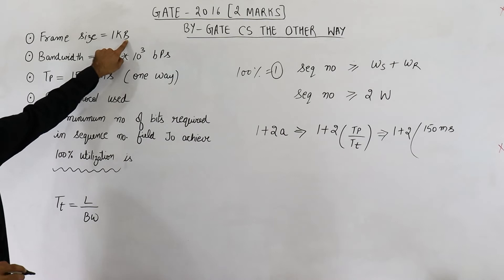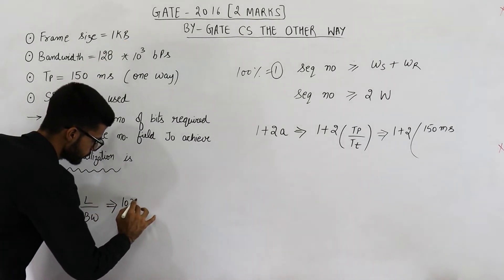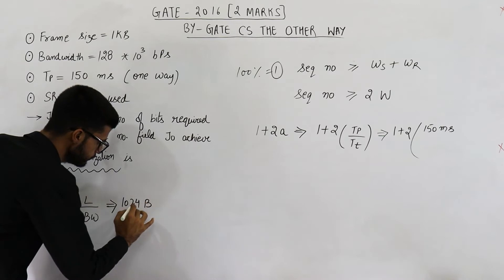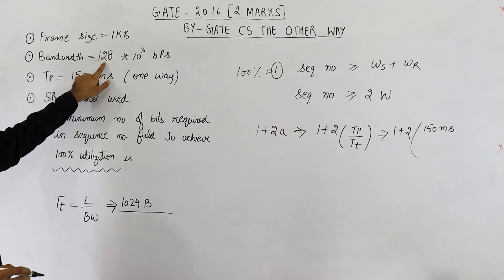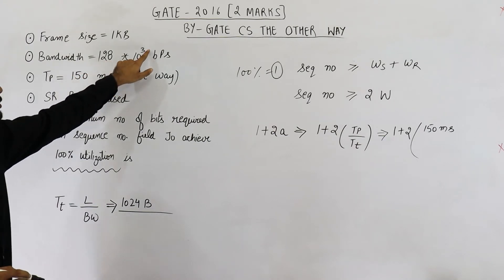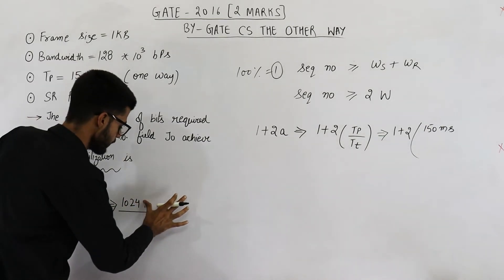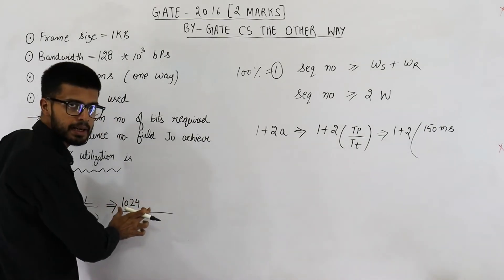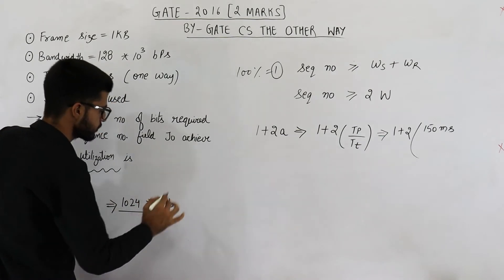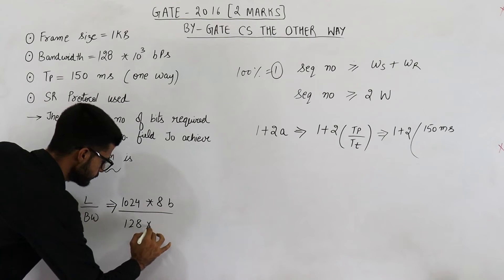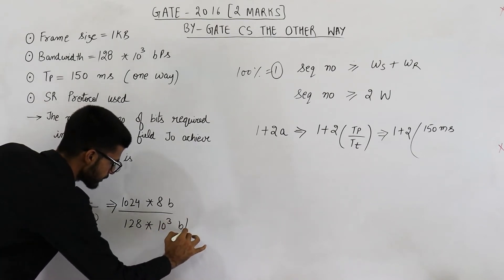Transmission delay is defined as length of packet divided by the available bandwidth. Length of packet is 1 kb, that means 1024 bytes. And bandwidth is 128 into 10 raised to the power 3 bits per second. So we also need to make the units equal. That means let us convert these bytes into bits. This will be times 8 bits.